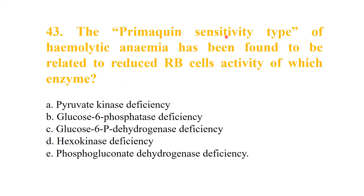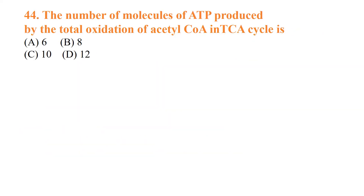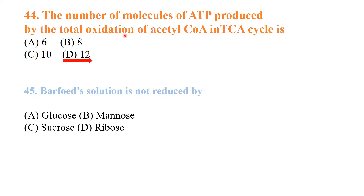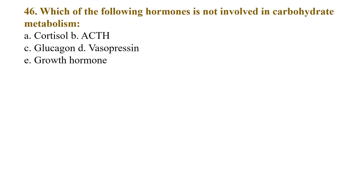Primaquine sensitivity-type hemolytic anemia is related to reduced red blood cell activity of glucose-6-phosphate dehydrogenase. The number of molecules of ATP produced by the total oxidation of succinyl-CoA in the TCA cycle is 12. Benedict's solution is not reduced by sucrose. Which of the following hormones is not involved in carbohydrate metabolism? The answer is vasopressin.